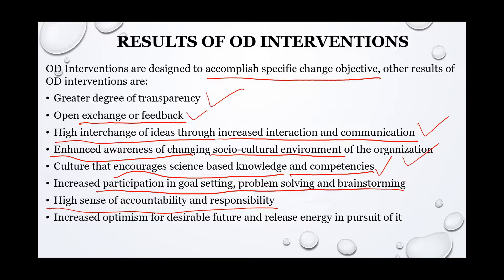Once they came back, they started understanding and analyzing how to improve their productivity, because the organization had taken initiative to help its employees. They started participating in all kinds of activities for the betterment of the organization, with a high sense of responsibility and accountability. It helped them optimize and maximize desired behavior for the future and release all their energy and effort towards it. This helped Bob Chapman's organization save billions of money through unpaid leave, and once employees returned, productivity also increased. This is an example of how intervention can bring better results to the organization.